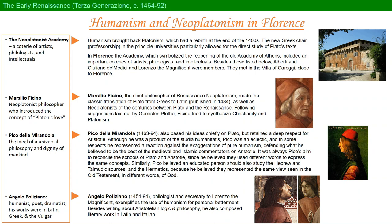Marsilio Ficino, the chief philosopher of Renaissance Neoplatonism, made the classic translations of Plato from Greek to Latin — which was still the scholarly language of the Renaissance — in 1484, as well as translations of the Neoplatonists of the centuries between Plato and the Renaissance. Following the suggestions laid out by Plato, Ficino tried to synthesize Christianity and Platonism, which is really the essence of what we're decoding in Renaissance art. Incidentally, Ficino was the one who introduced the concept of Platonic love as we understand it today.